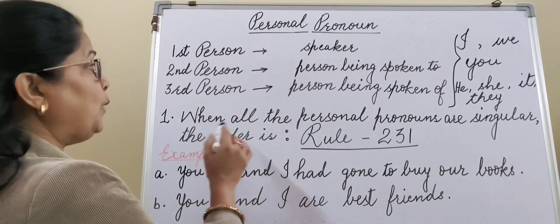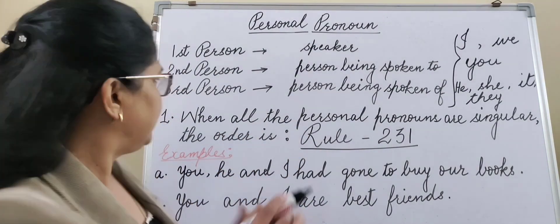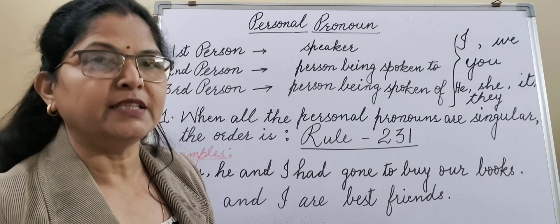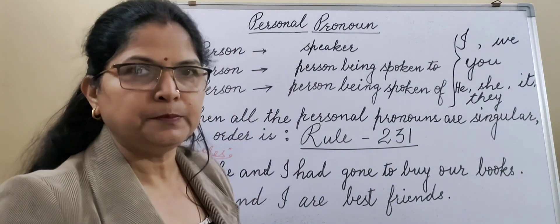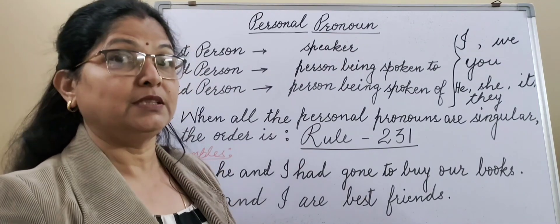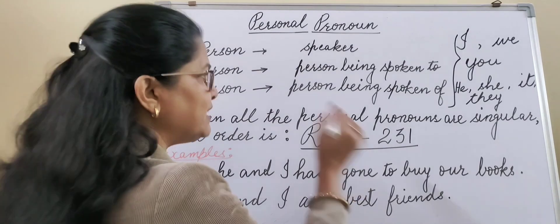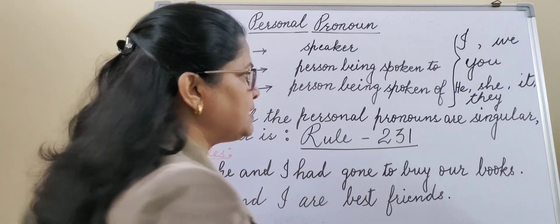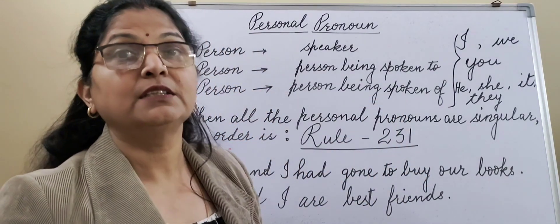When all the personal pronouns are singular, the order is Rule 231 — that is Rule 231. What is Rule 231? It means when we arrange first person, second person, and third persons together in a sentence, we arrange them in this order: second person at first place, third person at second place, and first person at third place.